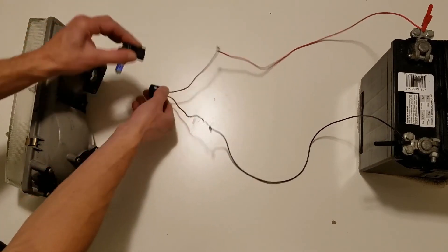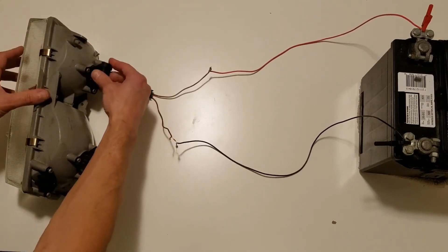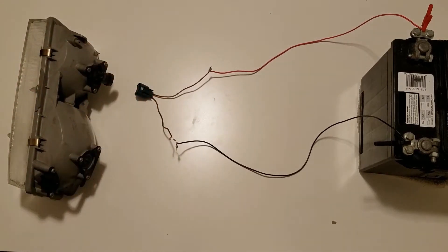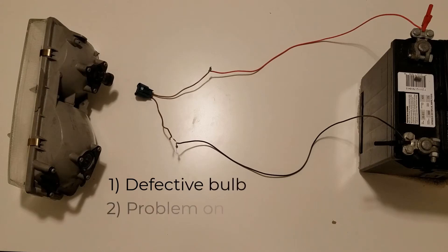The first thing we're going to do is disconnect the headlight connector. Just like with the open in the circuit, even though we know that we have high resistance on the ground side, in a real world situation all you would know is that the headlight bulb isn't working. The three things that can be wrong are: the bulb itself can be defective, a problem on the positive side of the circuit, or a problem on the negative side of the circuit.